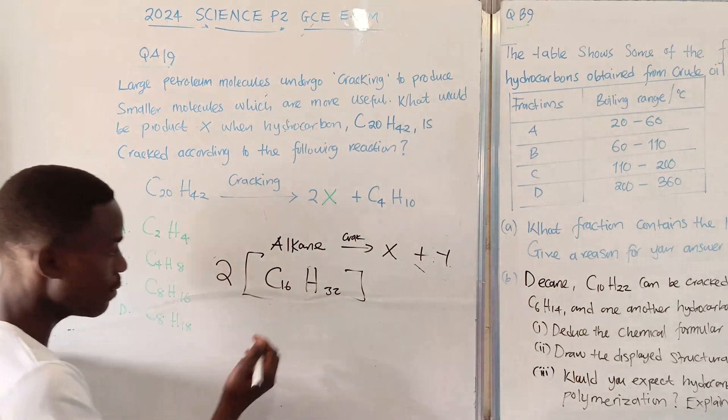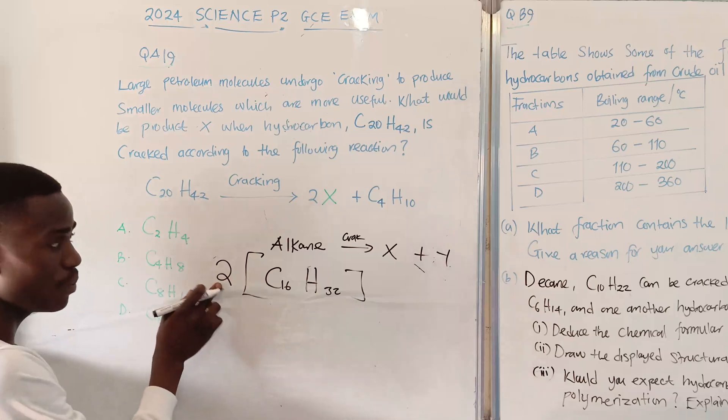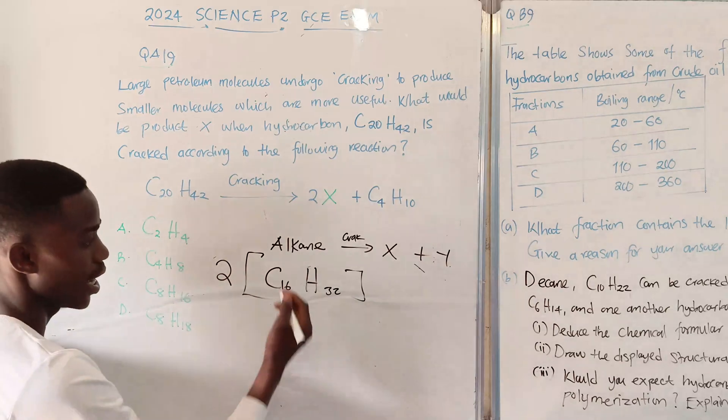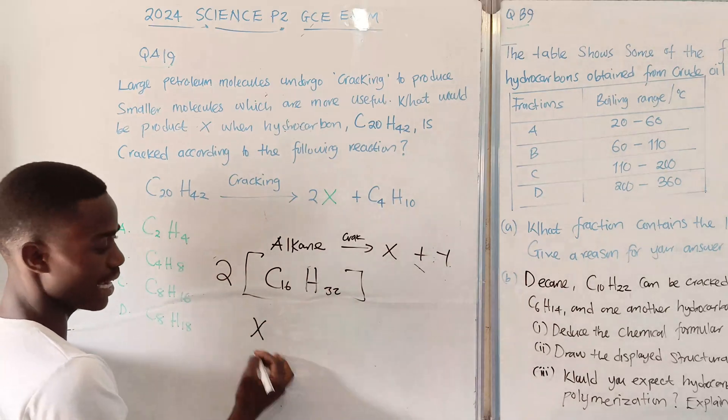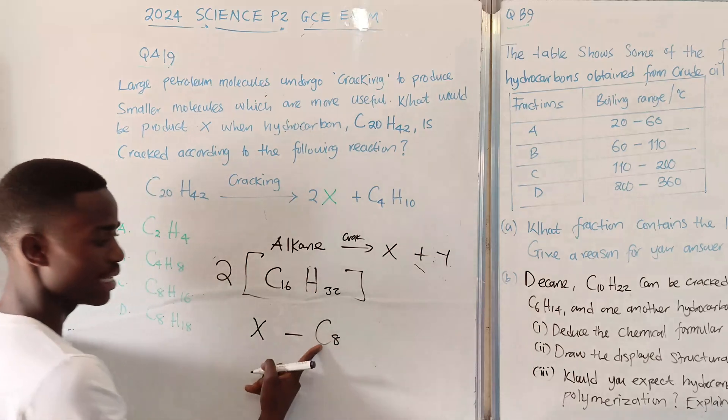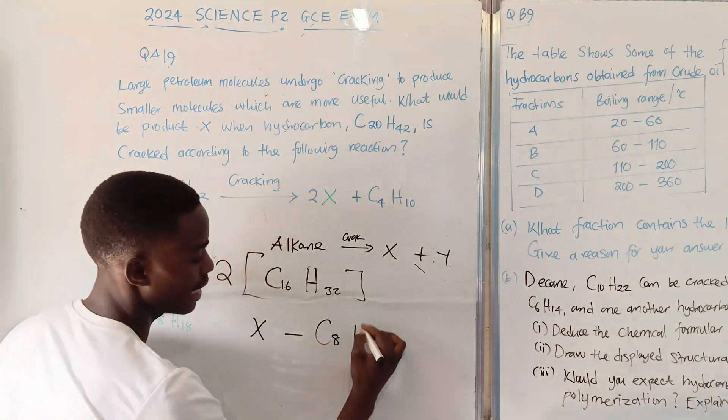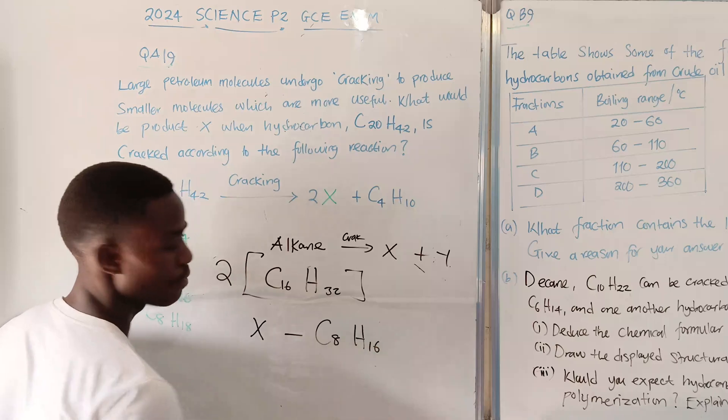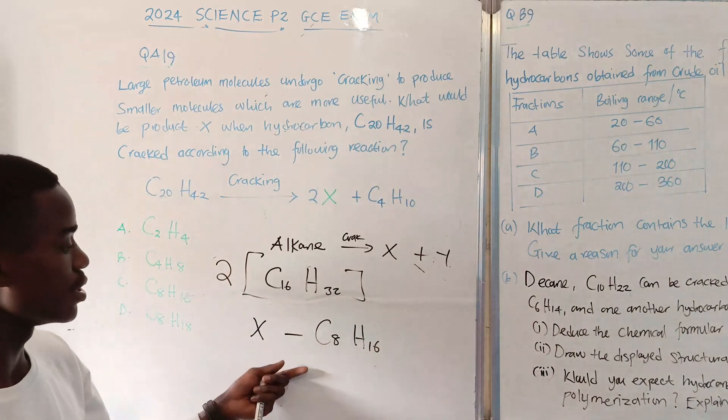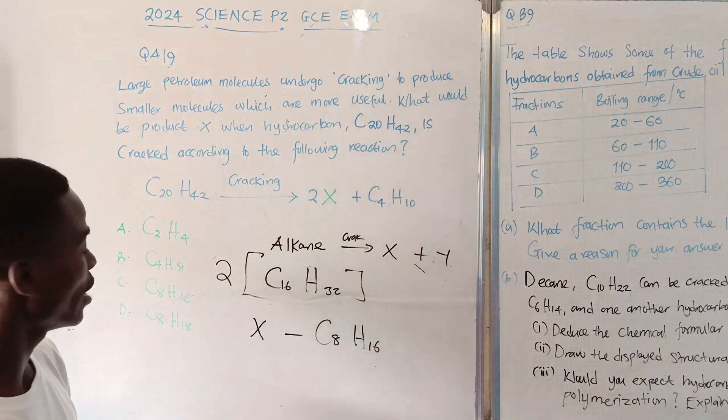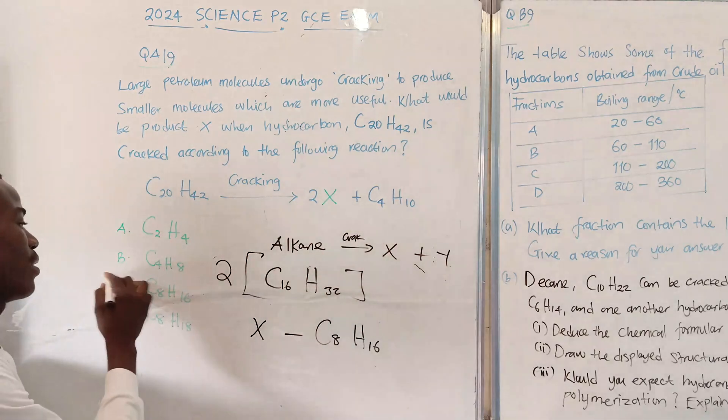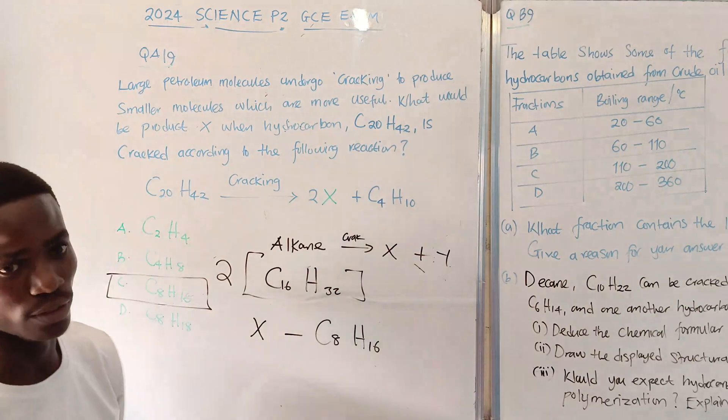So what I am supposed to do, since it is multiplying by 2, I need to divide by 2. So this X is just 8 carbons and 16 hydrogens. This is the chemical formula of hydrocarbon X. So, meaning that our final answer is C on this question.